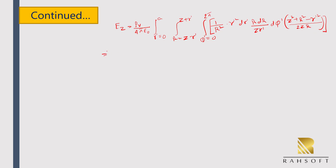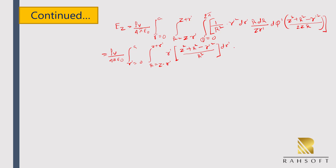Simplifying this expression: ρV divided by 4π ε₀, with limit r' from 0 to A and limit R from (Z − r') to (Z + r'), the integrand becomes (Z² + r² − r'²) divided by R² times dR dr' divided by 2Z². After evaluating the inner integral over R, the term in brackets simplifies.